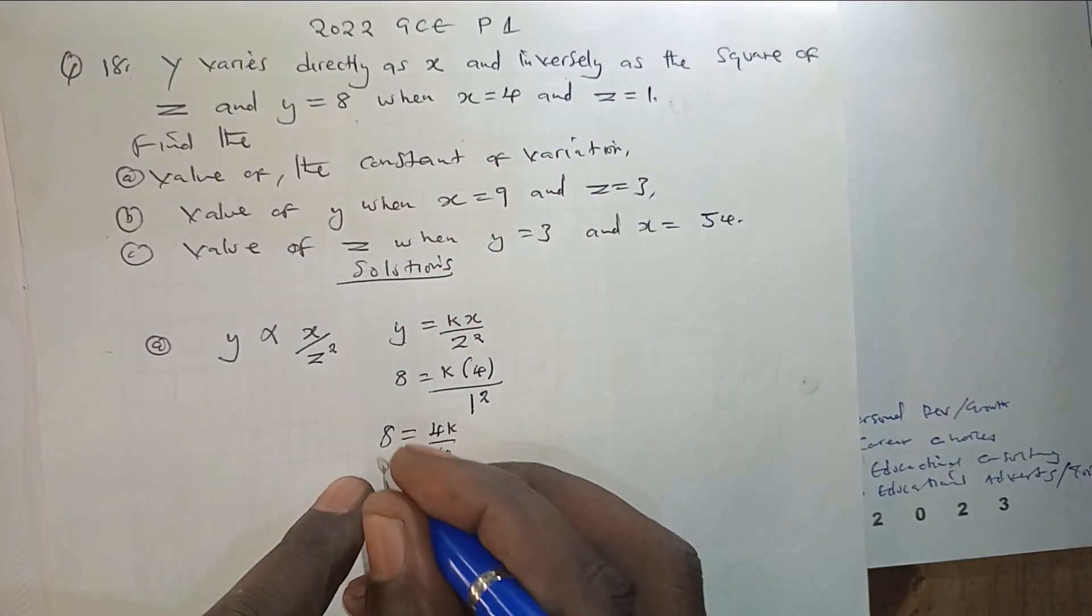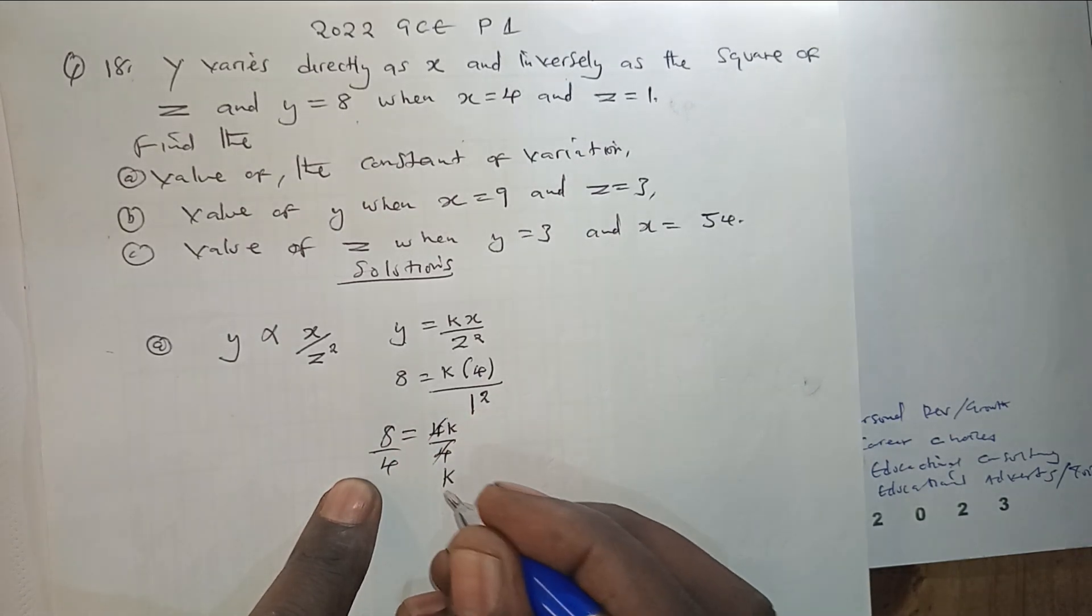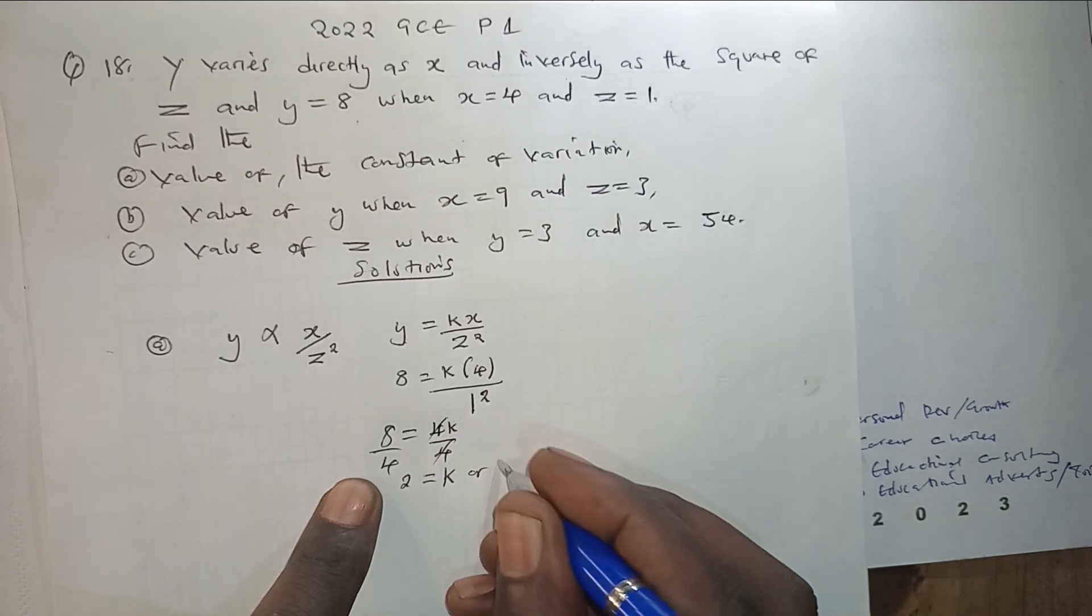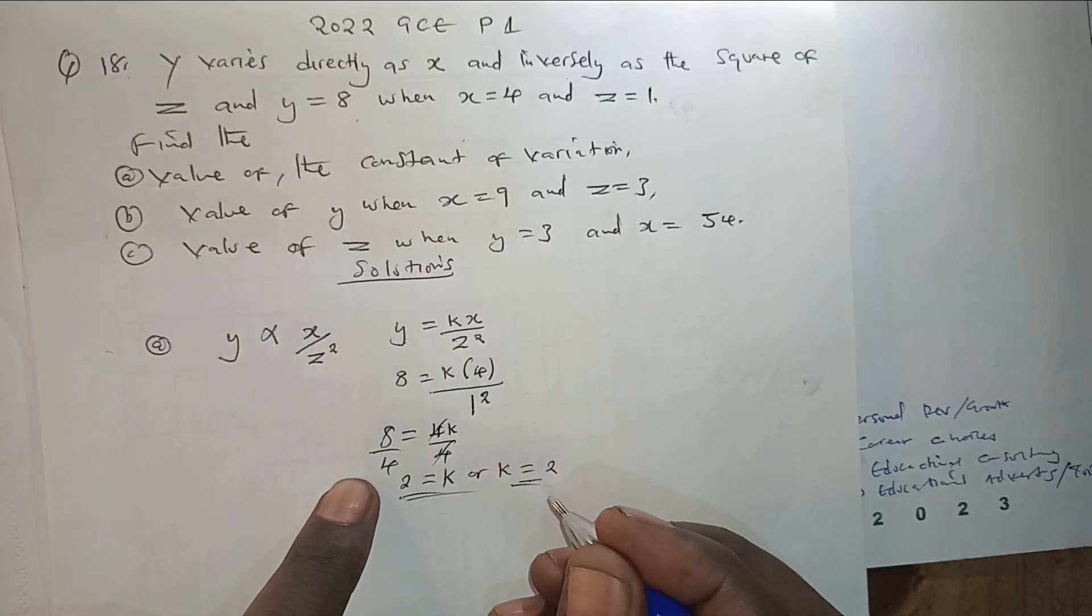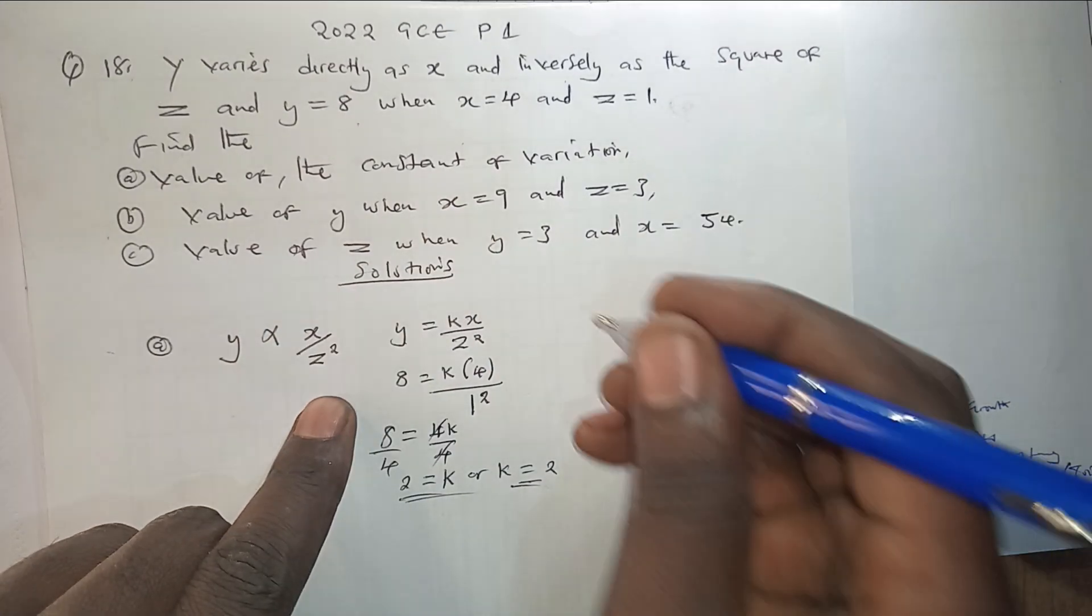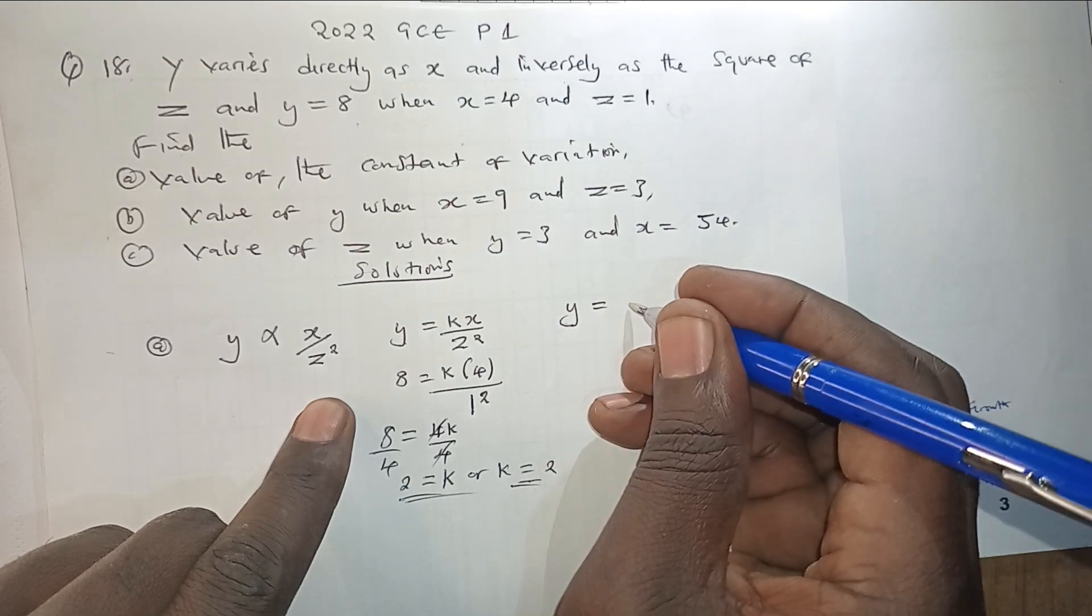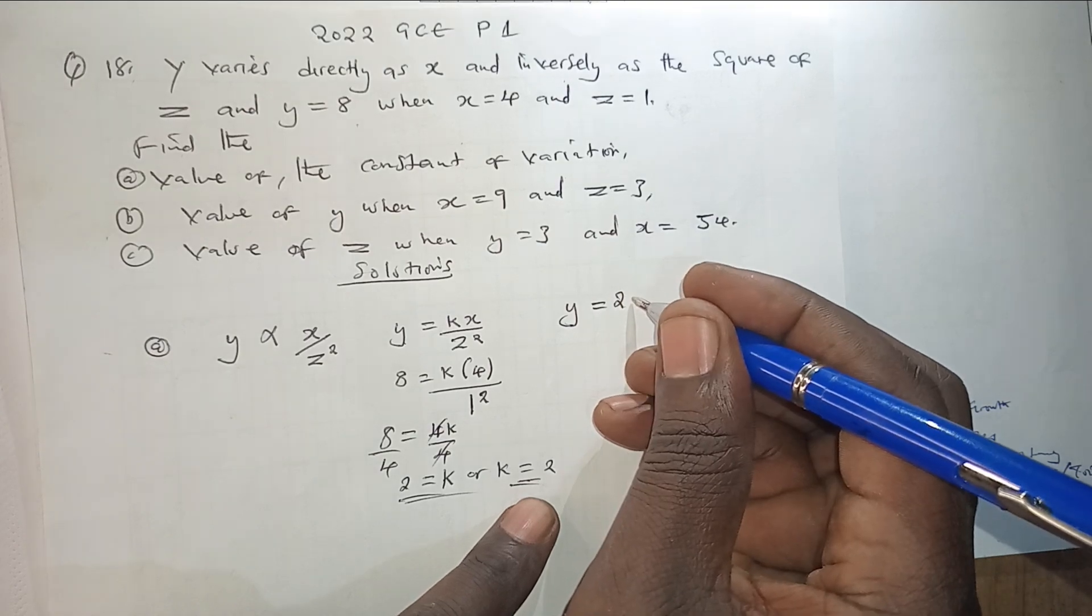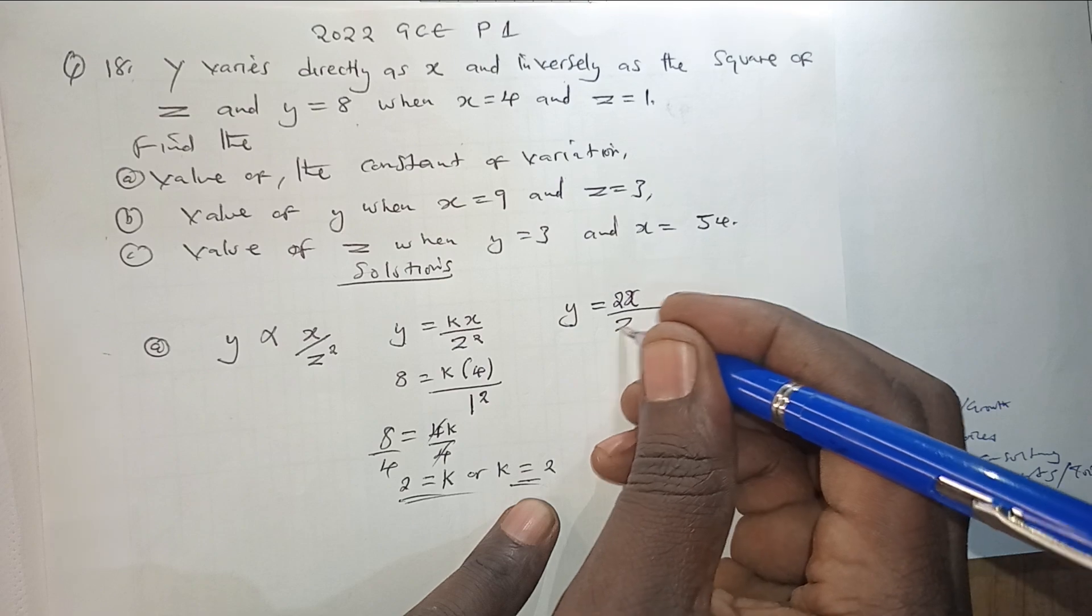The interest for us is to find the value of K, which is representing the constant variation. So we can simply divide on both sides by 4, and then we shall remain with K equal to positive 2. So we are done with finding the value of the constant variation, and meaning our equation now has changed to Y equals 2X over Z squared.